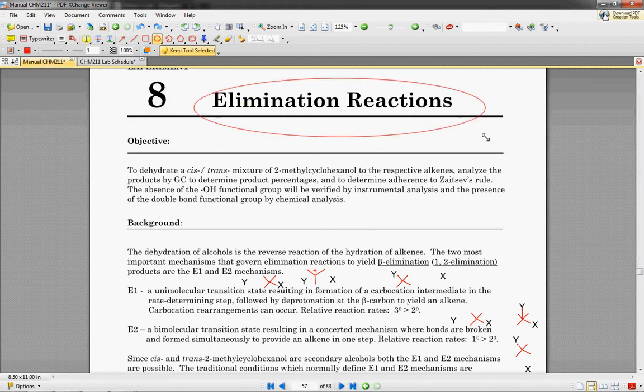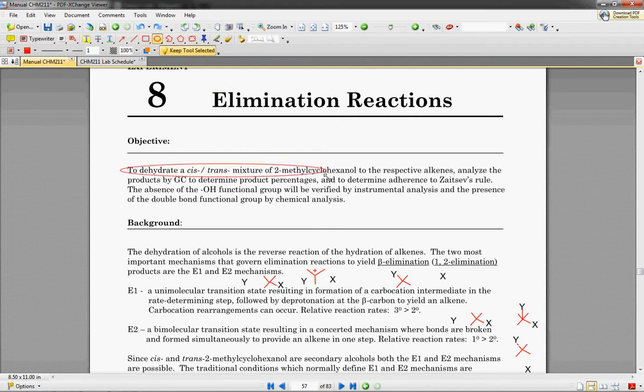This week we're going to go over elimination reactions, and the objective is to dehydrate a cis-trans mixture of 2-methylcyclohexanol to the respective alkenes and analyze the product by GC to find out what sort of percentages are yielded and see if that fits Zaitsev's rule. That's a lot of words, so let's break it down.